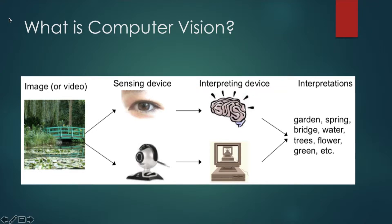For computers, an optical device takes the image or video and converts it into a binary or digital image in the form of numbers, because computers only understand the language of zeros and ones. This digital image is fed into a computer, and then based on computations done on that image it makes interpretations. It detects that in this image some kind of object is present — maybe a garden or a spring — doing object detection via a computer or system.